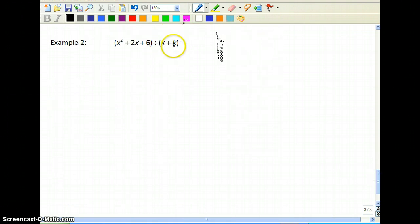In this problem, they actually put k in the box. So this would be actually negative k because we take the opposite sign. Coefficients are 1, 2, and 6. And the remainder in the problem from up above is 5. So we know that we can put that 5 in there.